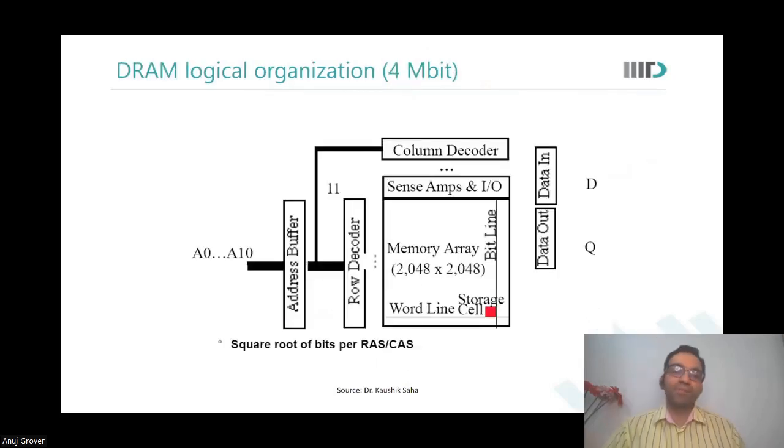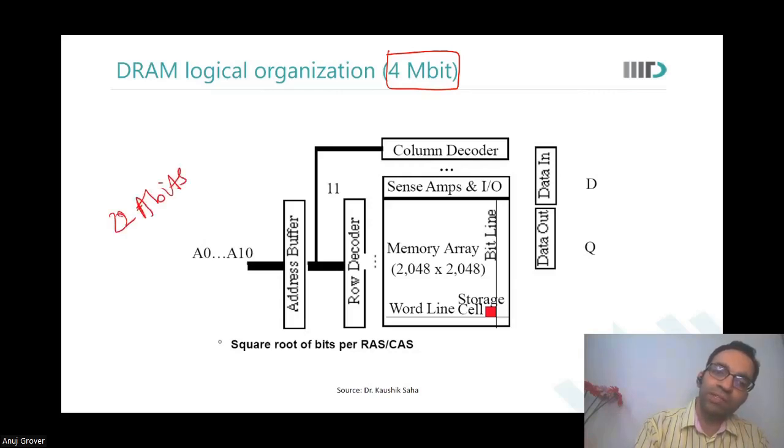Let us say we had a 4 megabit DRAM. You have 2K cross 2K array. So for 4 megabit, you would otherwise need 22 bits, 22 address bits. That is a huge address bus.